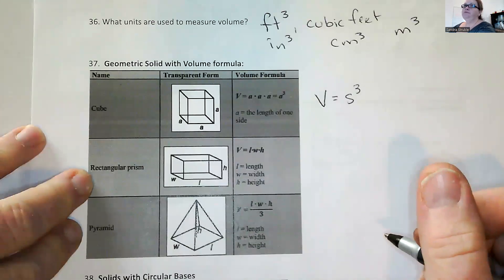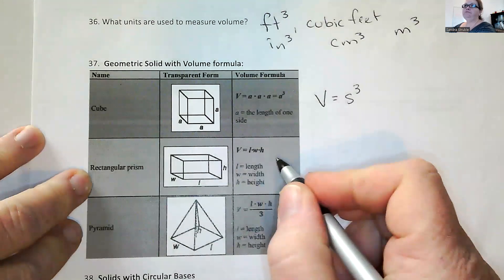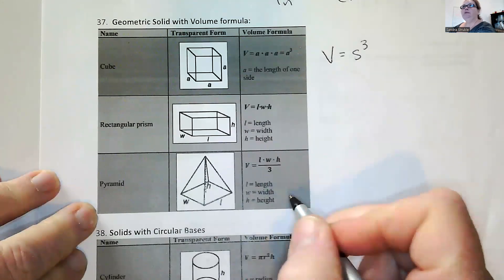For a rectangular prism, it's just length times width times height. For a pyramid, length times width times height divided by three.